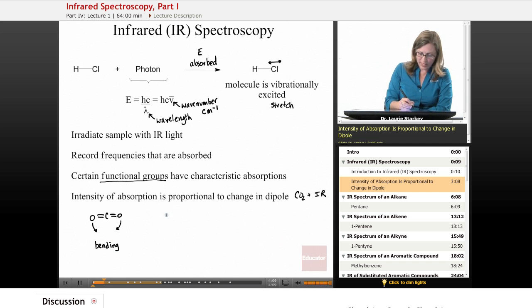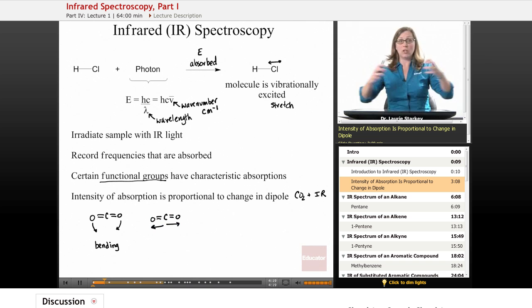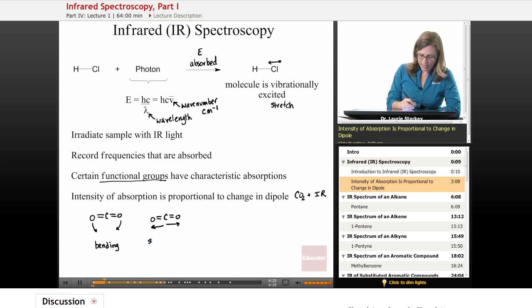Now another thing that carbon dioxide can do is we can have stretching of bonds, like we saw here. And so we can have both of these oxygens stretching and getting longer and shorter, and longer and shorter. Because they're going in sync, we call this a symmetric stretch.